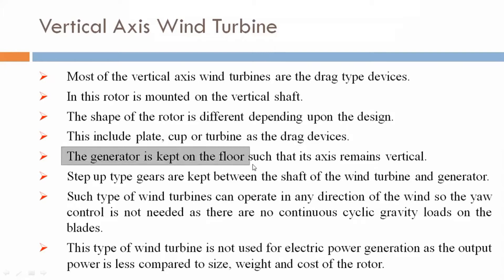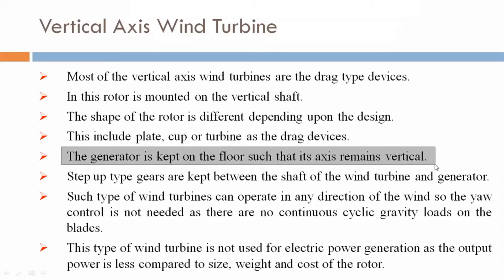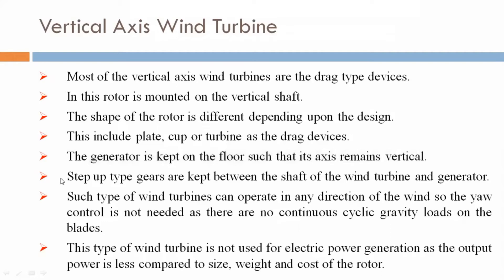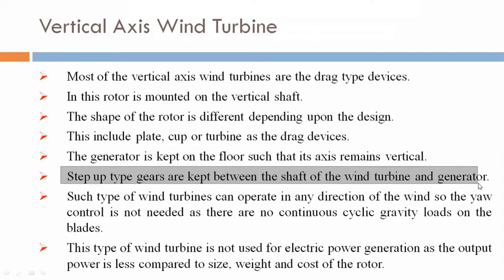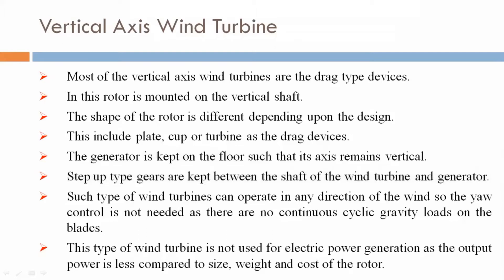The generator is kept on the floor such that its axis remains vertical. Step-up type gears are kept between the shaft of the wind turbine and the generator.